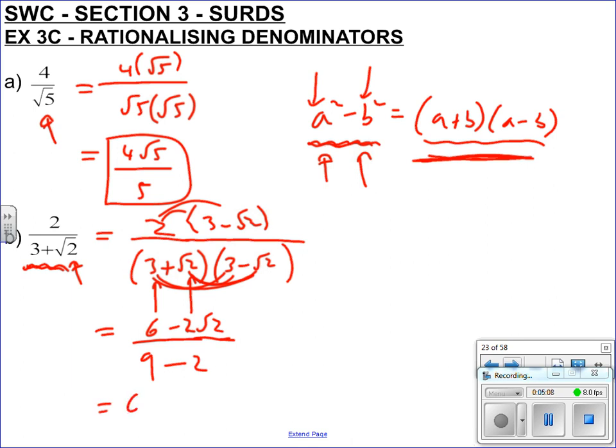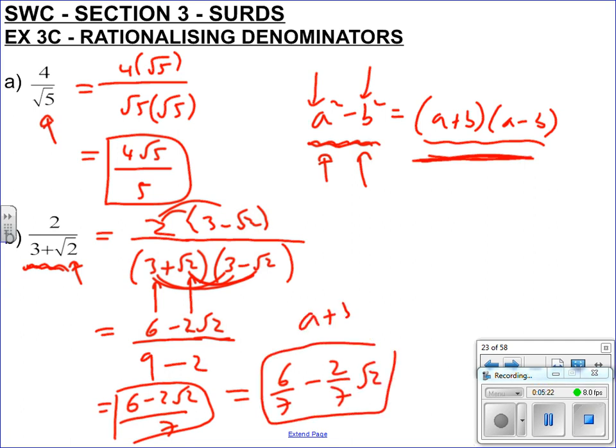And that way, you get six minus two root two all over seven. And this is now rationalized. And you could finish this off by just splitting the fraction up. So six over seven take two over seven times by root two. That's now in the form a plus b root c, okay?